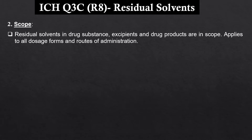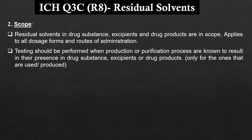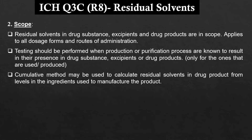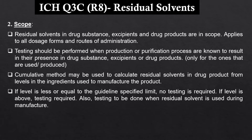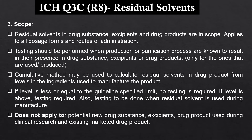Looking at the scope, this guideline is applicable to all drug substances, excipients, and drug products. It applies to all dosage forms and routes of administration. The guideline specifies that testing should be performed when production or purification processes are known to result in the presence of residual solvents in the products — only in the case where solvents are used or produced during subsequent steps in manufacturing. A cumulative method may be used to calculate the residual solvents in the drug product from levels in the ingredients used to manufacture the product. If the level is less than the guideline-specified limit, no testing is required; if the level is above, then testing should be done. Also, testing is to be done when a residual solvent is used during the manufacturing. This guideline does not apply to products for clinical research purposes or to already-existing marketed products.